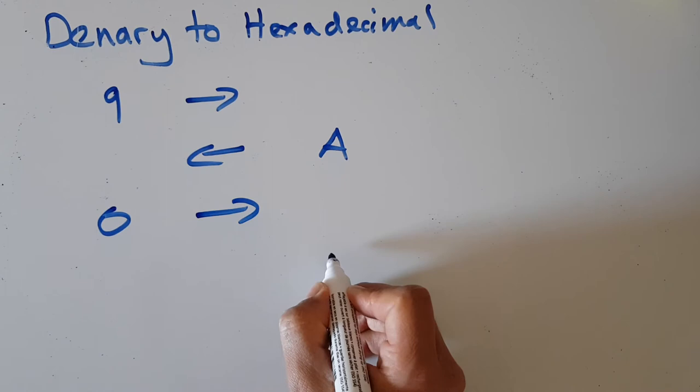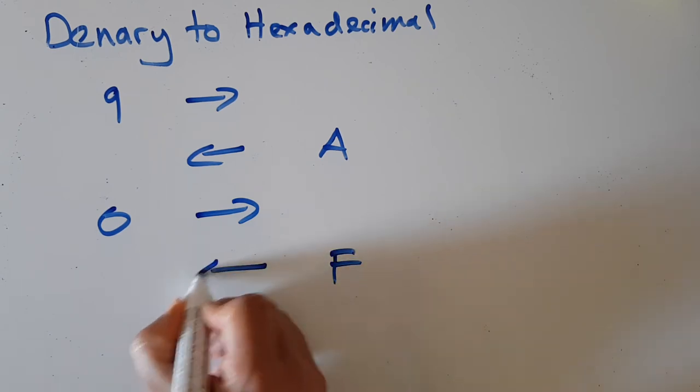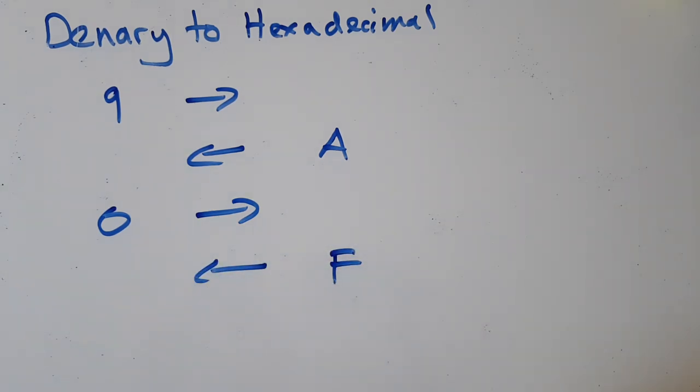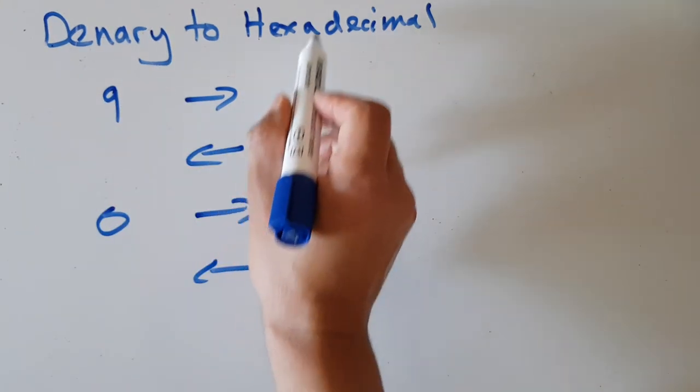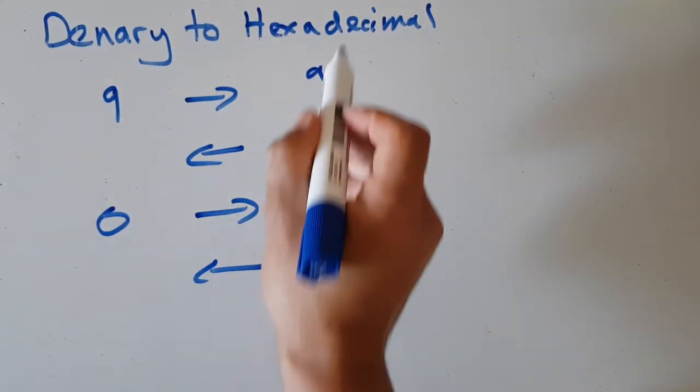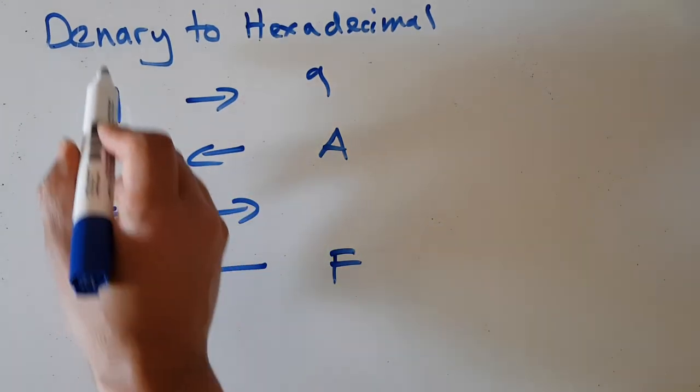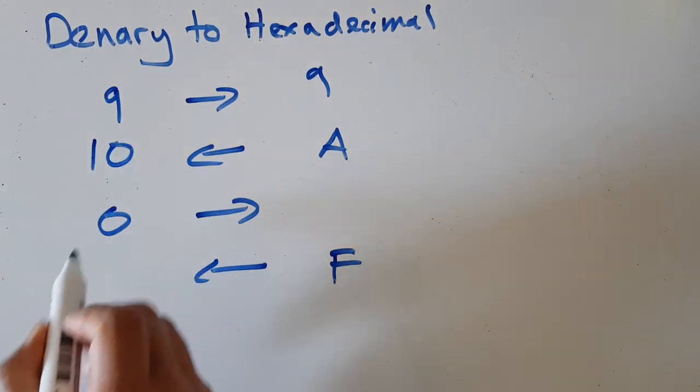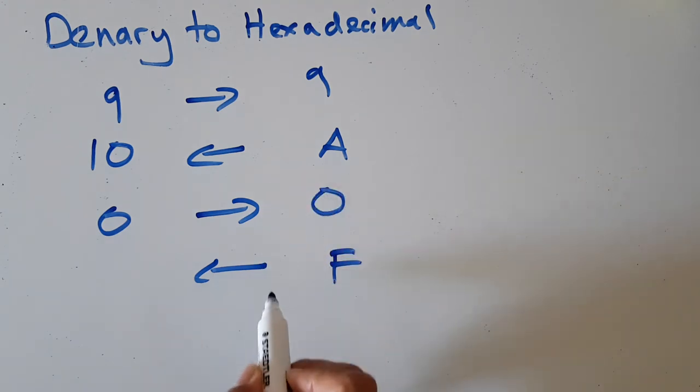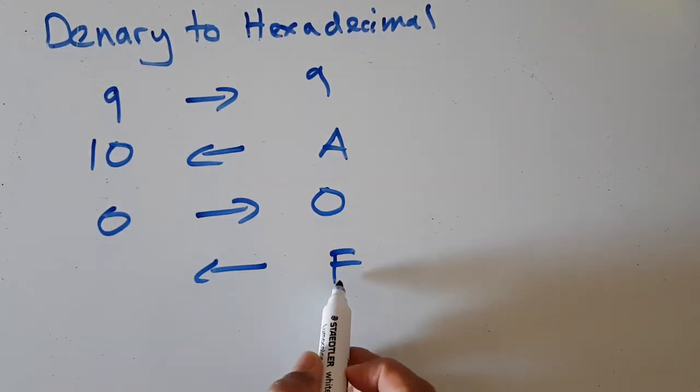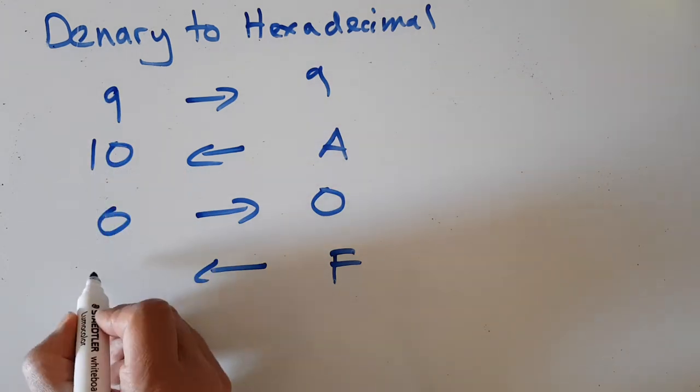And what is hex F converted to denary? So, nine denary is exactly the same: it's nine hexadecimal. A converted to denary is 10. Denary zero was exactly the same in hexadecimal—remember, nought to nine is the same. Hexadecimal F converted to denary? Well, that's 15.